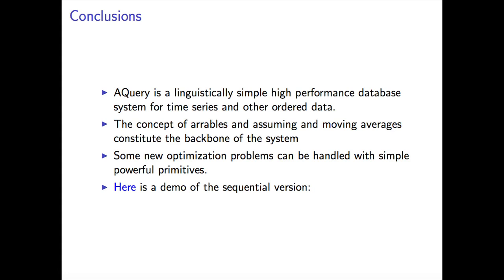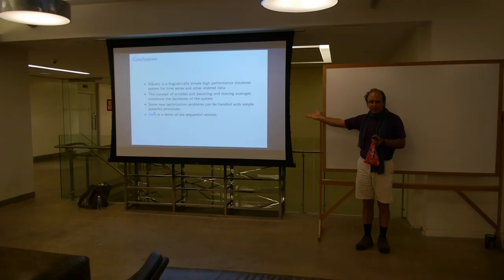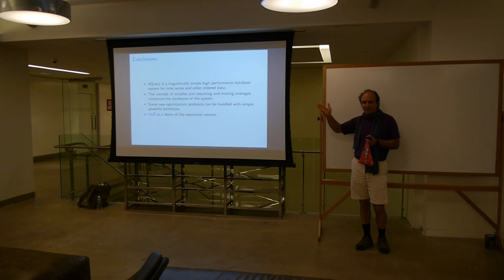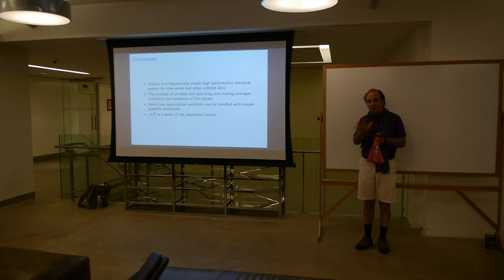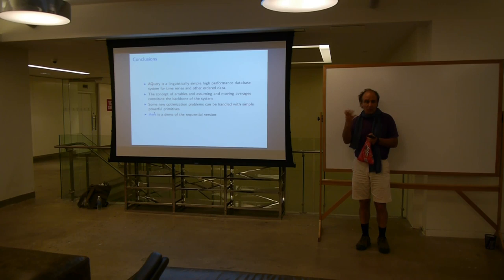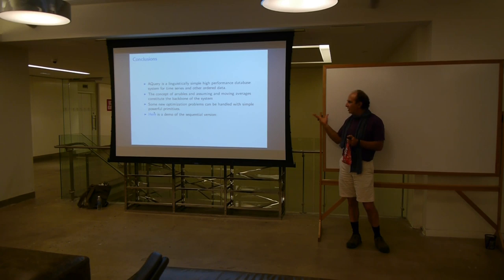The conclusions are that it's simple, and we have this concept of arables and moving averages, which are the backbone of the system. We have some optimizations — even though our parallel optimizations don't work out that well, the sequential ones do. We're about as good as hand-built Q by a quite talented Q programmer. So if somebody says, 'I know SQL and I want to come into Q,' then this might be something to use.